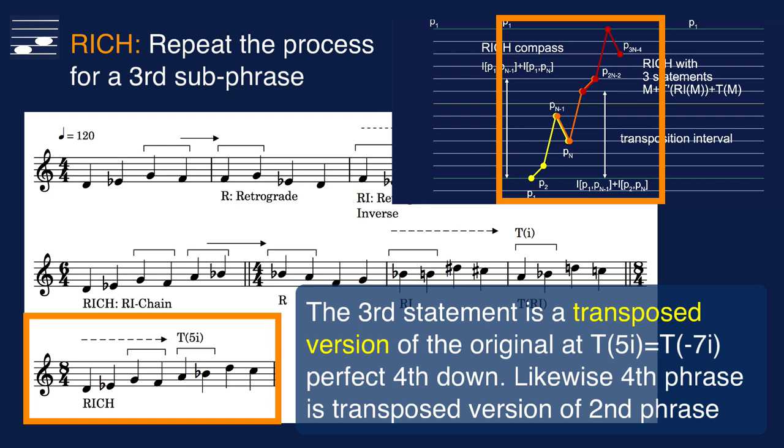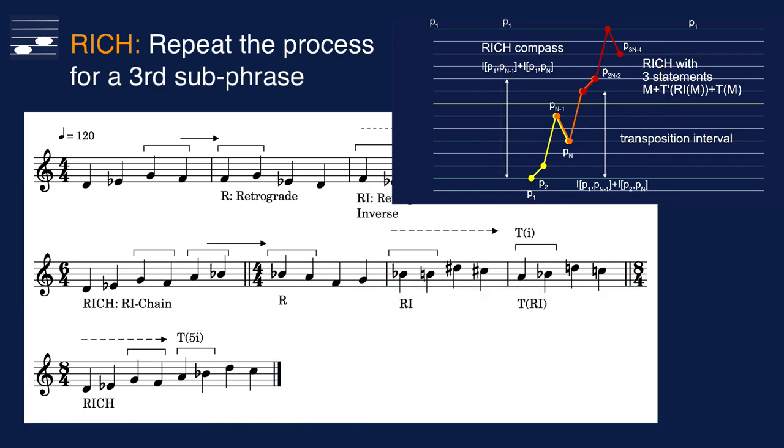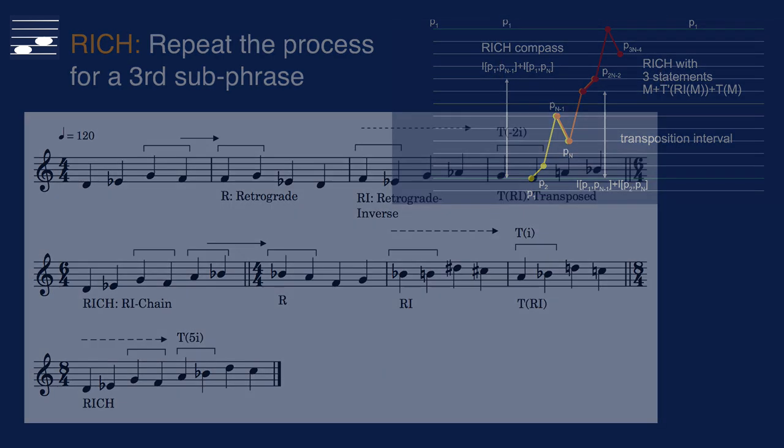Similarly, statement 4 would be a transposed version of number 2. The multiple statement RI chain contains repeating patterns in the pitch domain, as may be clear from the diagram in the top right. Listen to this RICH example.